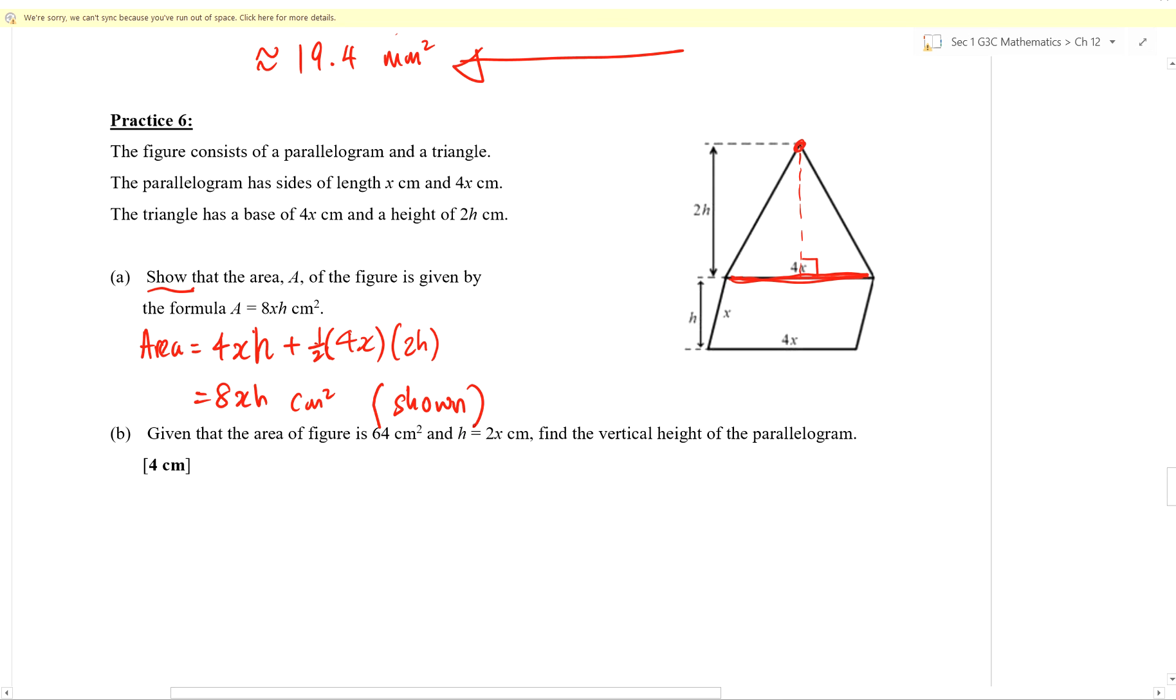My part B, given the area of the figure, 64. H is 2X. Find the vertical height. What do you think we can do with this information? What should we do with this information? Substitute. Let's substitute. Area given to be 64. So instead of writing area, we write 64. The next thing that we need to write, what comes after the area? I see an equal sign. I see an 8. I see X. Do we know what X is? At this point, we don't know, right? Let's just put it down, since we don't know. Then I see H. H is given to be 2X. Do you think I should leave it as H or 2X? Do you want to leave it as H or do you want to change it to 2X?